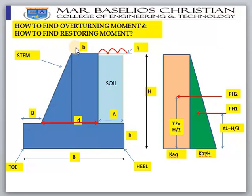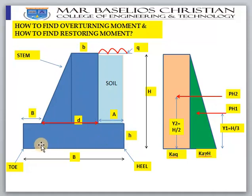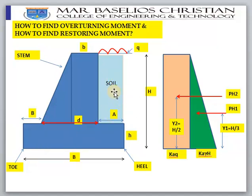Looking at the figure, the blue color shows a normal retaining wall. The vertical part is called the stem, there is the heel, and the width of the stem is denoted as B. The light-colored portion represents soil, and the load on top is the surcharge q.